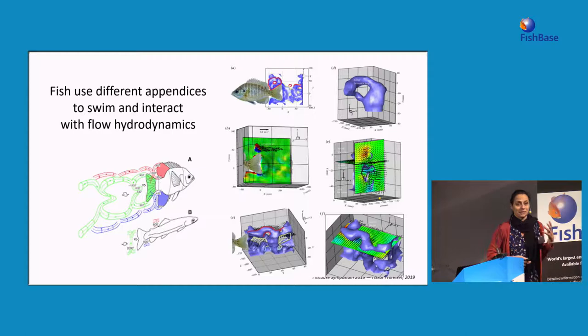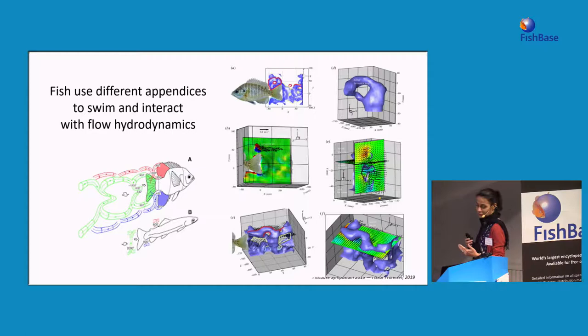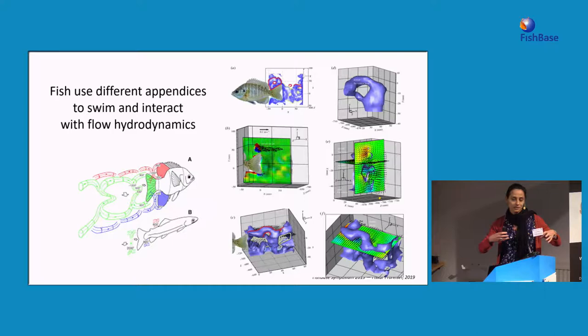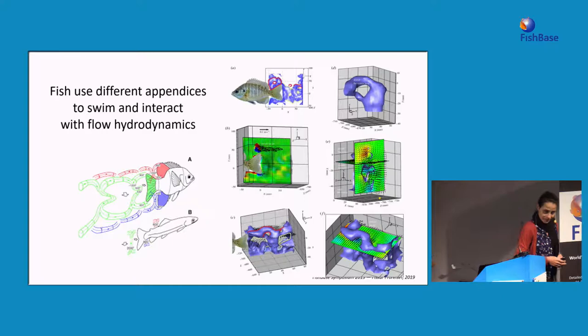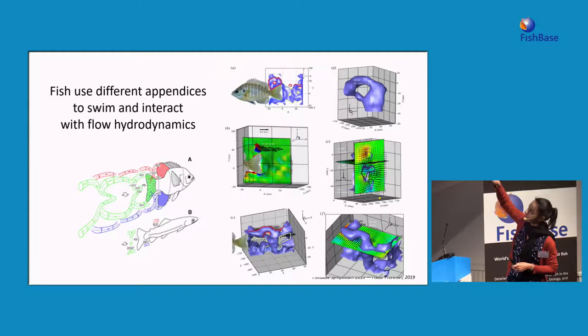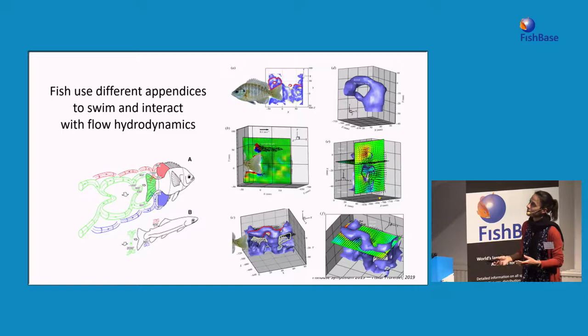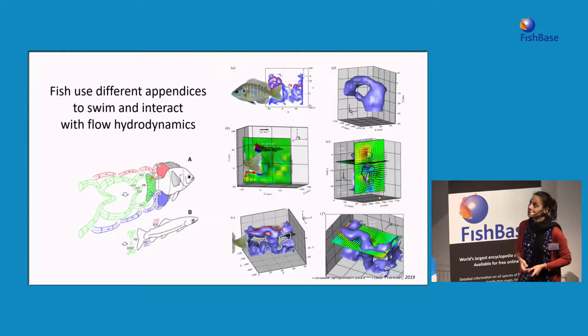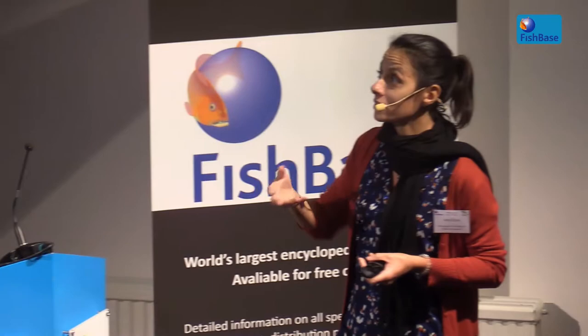Fish use their different appendages to interact with water. By doing that, they also create different circulation areas. You can see here on the right, in different planes — horizontal, transversal, and longitudinal — what happens when fish swim. These results are taken from experiments run with fish in a laboratory, where you seed the water with particles and measure all the velocities and hydraulics around the fish and the interaction between the fish and the water.